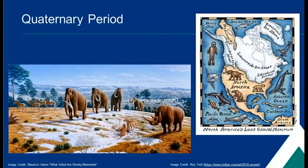Now we have reached the Quaternary period. The climate began to cool here as Earth moved through different ice ages known as glaciations. Interglacial periods are times between the ice ages — we are currently in one of these periods. This is about the time when humans came to be. Humans came in the Holocene epoch of the Quaternary period.